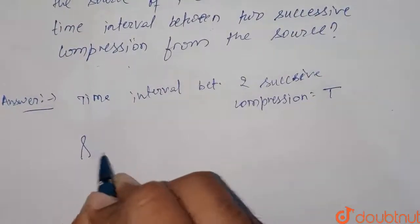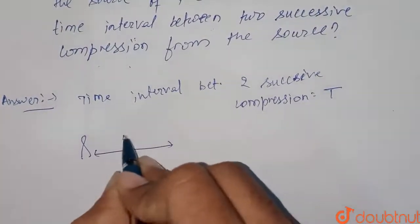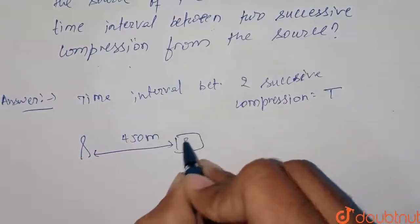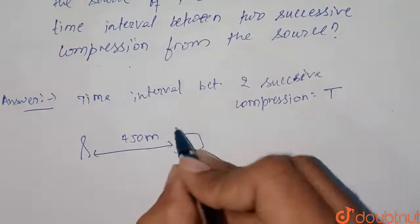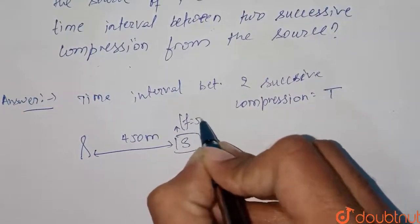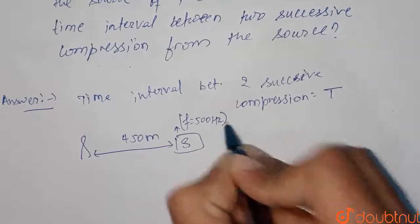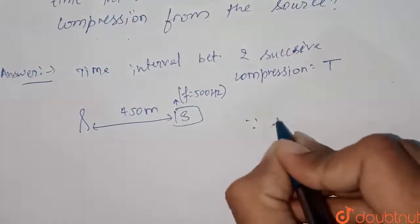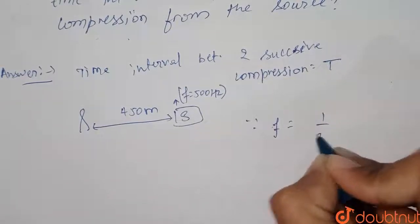Now here the situation is: here is a person who is sitting 450 meter from the source S, and source is generating a sound of frequency given as 500 hertz. Now, if you know, since frequency is equal to 1 by time period,